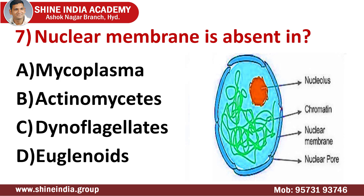Question number seven: nuclear membrane is absent in? Prokaryotic cells lack membrane-bound organelles and a well-organized nucleus — that is, the nuclear envelope is absent in these cells. This nuclear envelope is also known as the nuclear membrane, a bilayer membrane which surrounds the nucleus. In eukaryotic cells, nuclear membrane is present, separating the contents of the nucleus from the rest of the cell, found in both animal and plant cells. It serves to separate chromosomes from the rest of the cell and includes small pores that permit the passage of certain materials such as nucleic acids and proteins between the nucleus and cytoplasm.